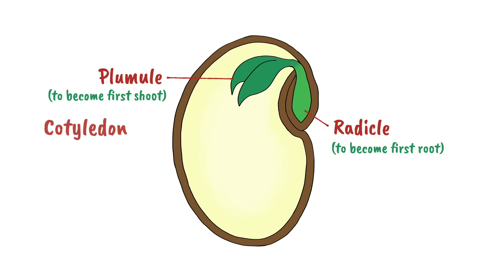Seeds also have cotyledons which act as a food store for the new plant until it's able to carry out photosynthesis. They also have a seed coat which forms a protective layer.